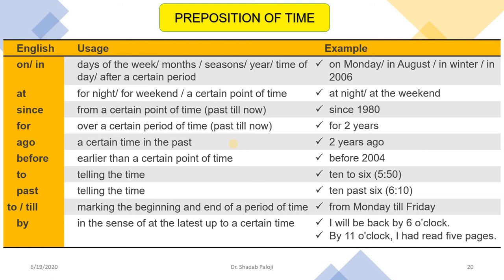'Ago' refers to something in the past — 'two years ago' — meaning it happened in the past and is not continuing to the present. 'Before' means earlier than a certain point — 'before 2004.' 'To' is used when telling the time — '10 to 6' means 10 minutes remaining before 6. 'Past' is also for telling time — '10 past 6' means 10 minutes have passed beyond 6. The difference: 'to' means time remaining, 'past' means time already elapsed.